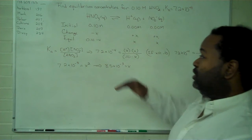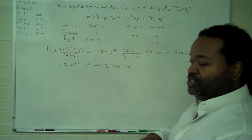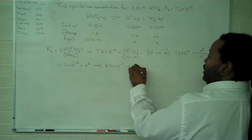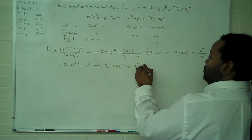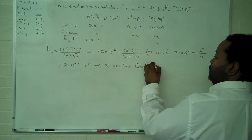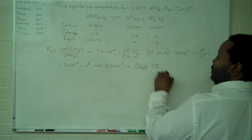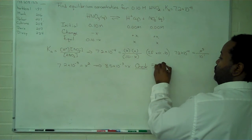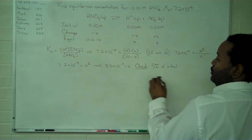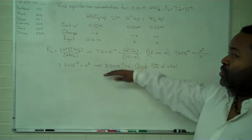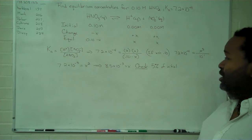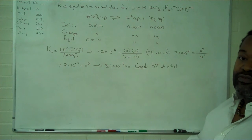Now, in order to determine whether or not this approximation actually works and is valid, we perform a check and we use 5% of the initial. If this quantity is less than 5% of the initial amount, then it actually is small enough for this to work.